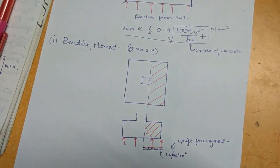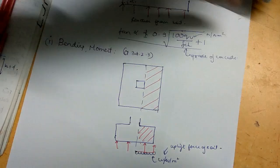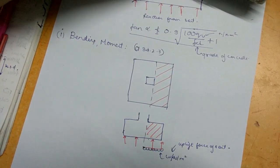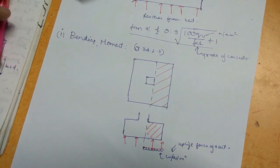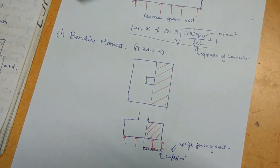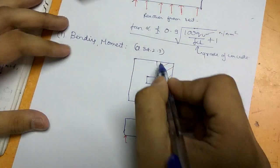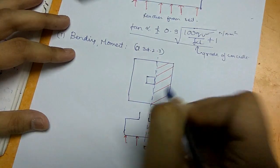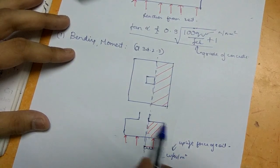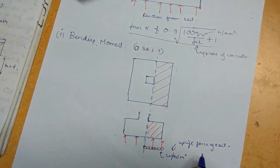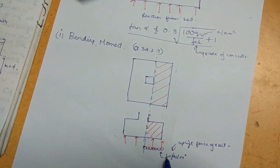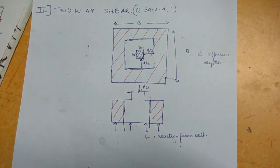Now let us see the forces acting on the footing. The first is the bending moment, given in clause number 34.2.3. It says the bending moment at any section shall be determined by passing a vertical plane completely across the footing and computing the moment of forces acting over the entire area of the footing on one side of that plane. The force acting on this plane is the uplift force of the soil.